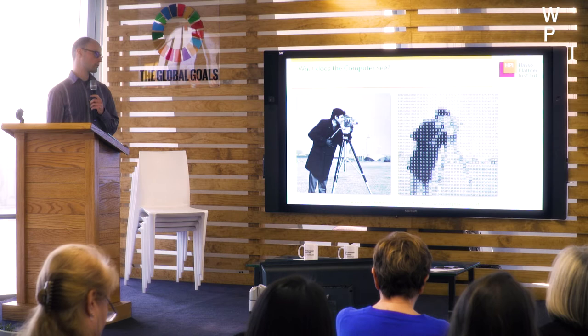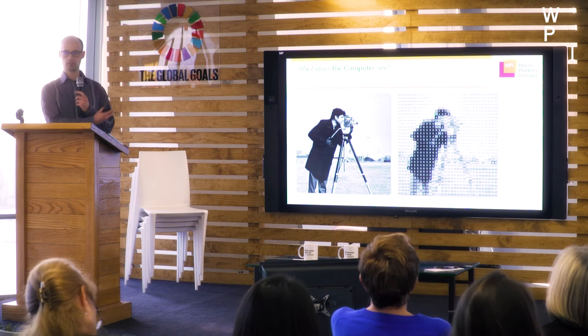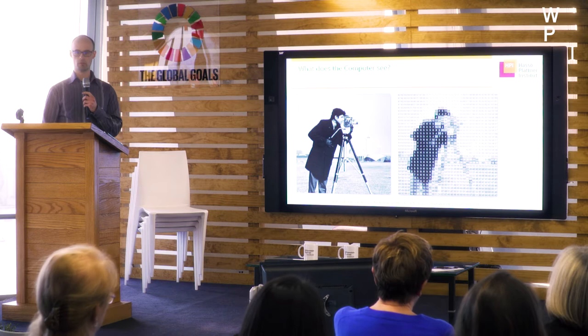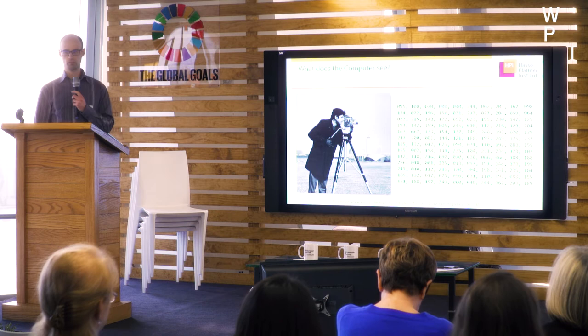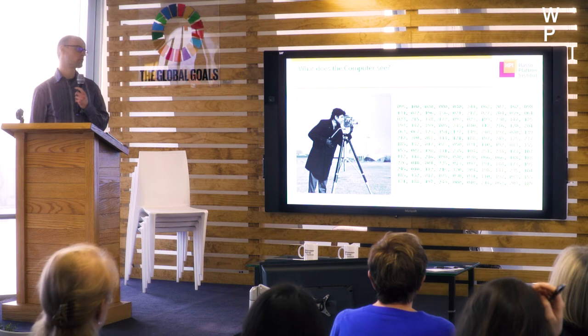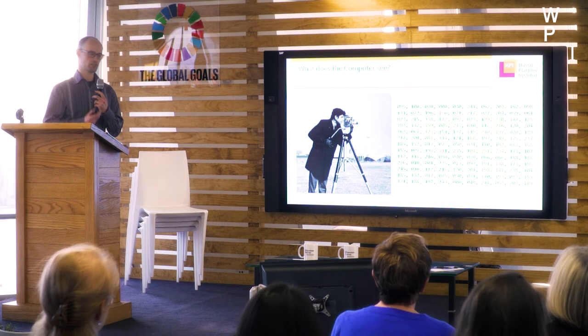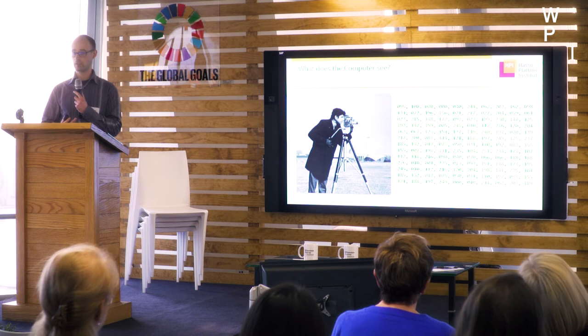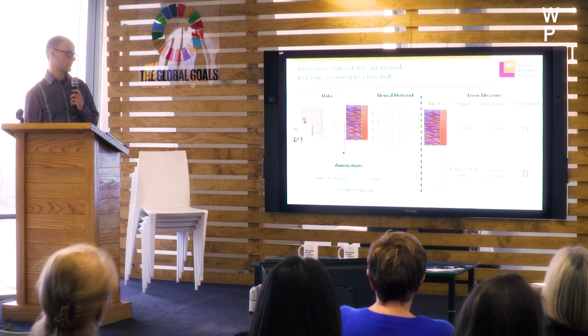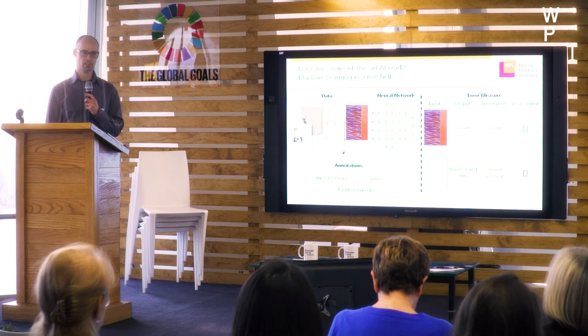If we look at an image — say a man with a camera standing on a field — the computer sees only numbers. If you take it to an extreme, the computer sees just a grid of numbers, which is quite difficult for us to understand. So we need to use sophisticated methods to actually extract the information from that image — and that's where we could use machine learning.